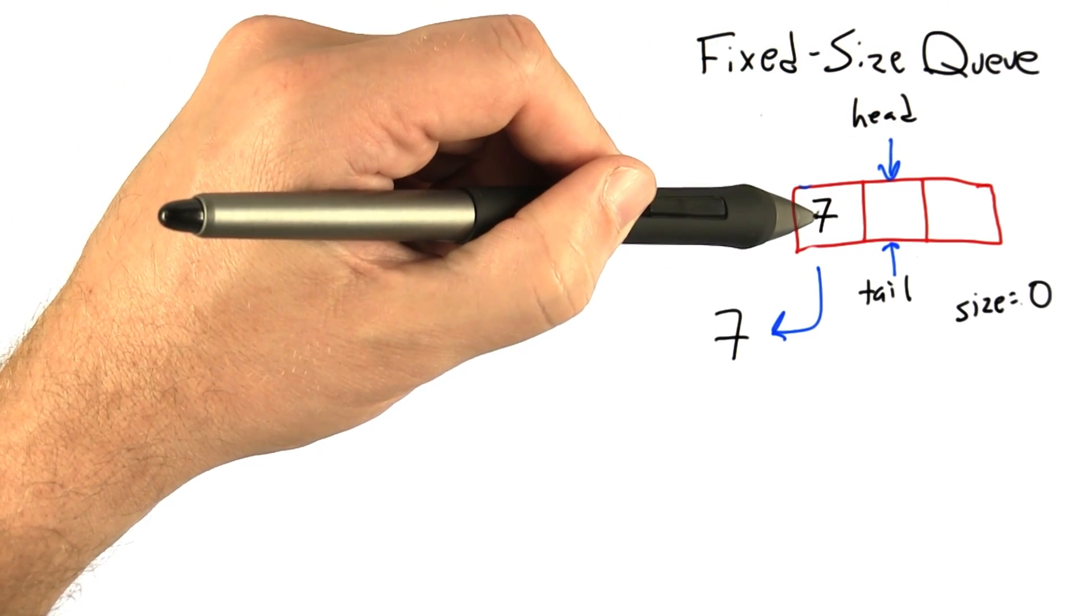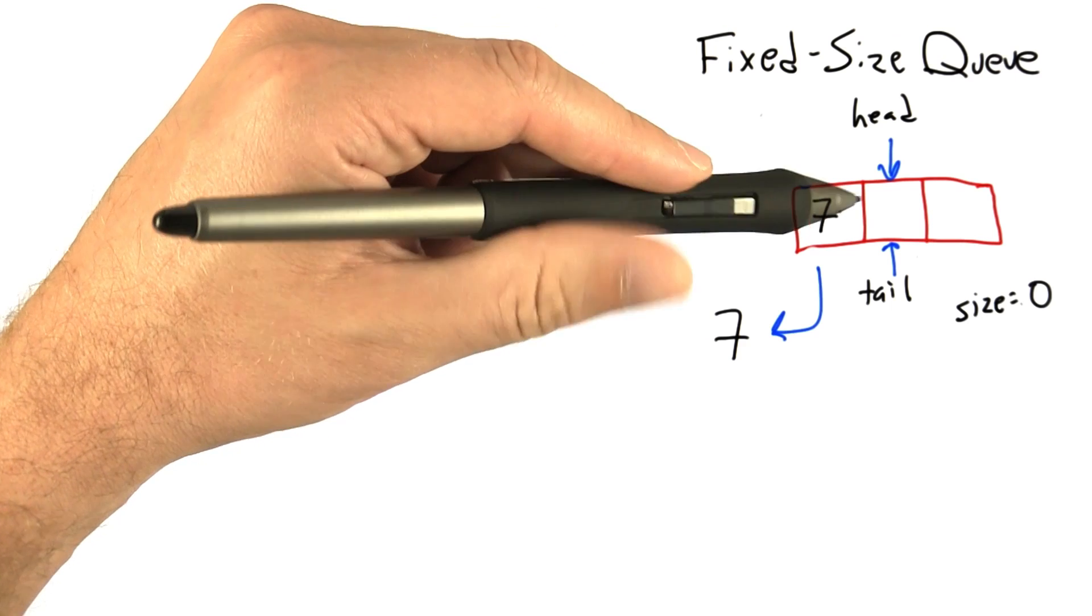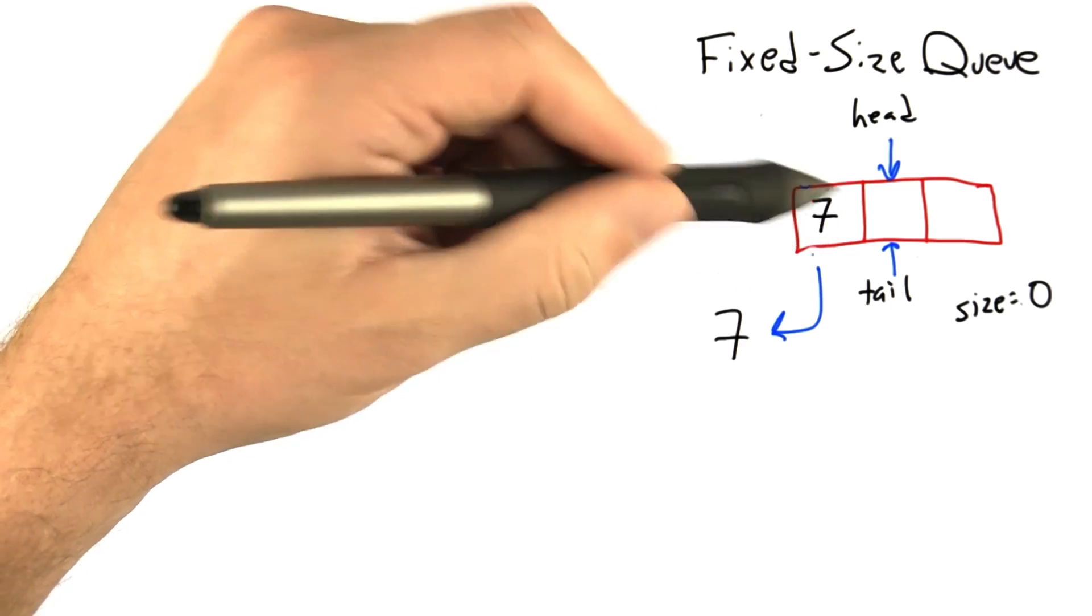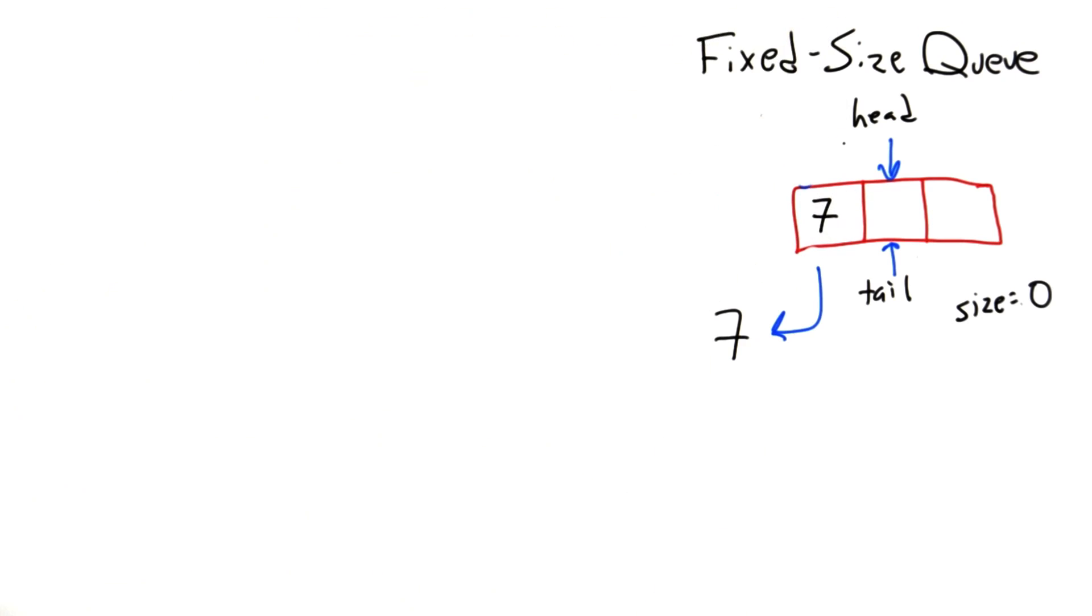We're not going to bother erasing the 7 that we returned, but we have to make sure our queue logic never returns this dead element. Let's take a very quick quiz to make sure we understood all that.